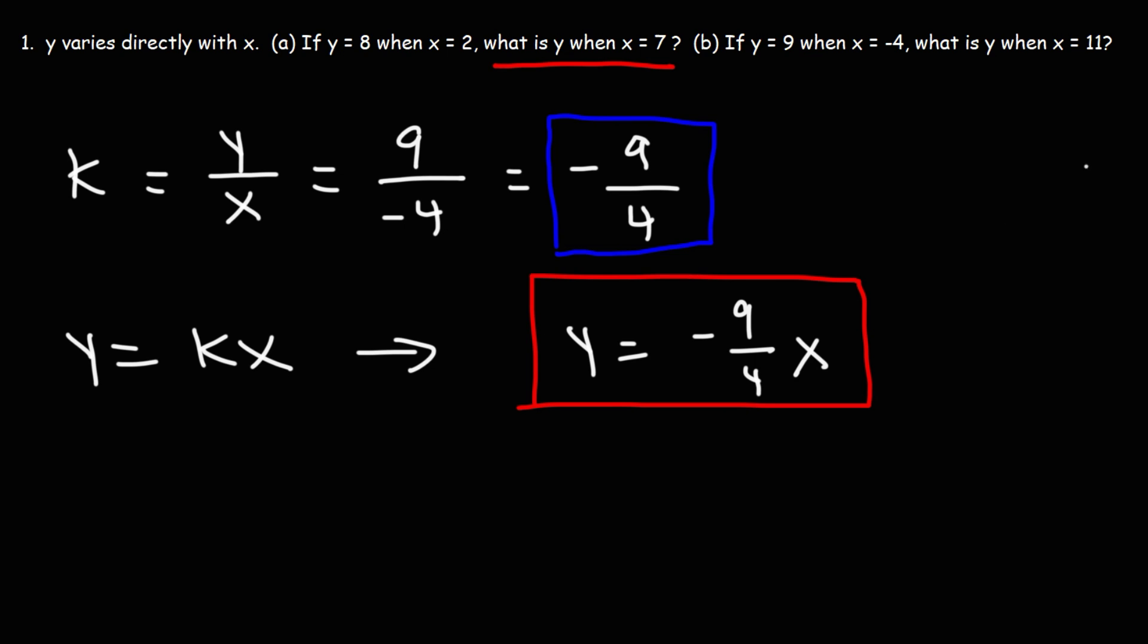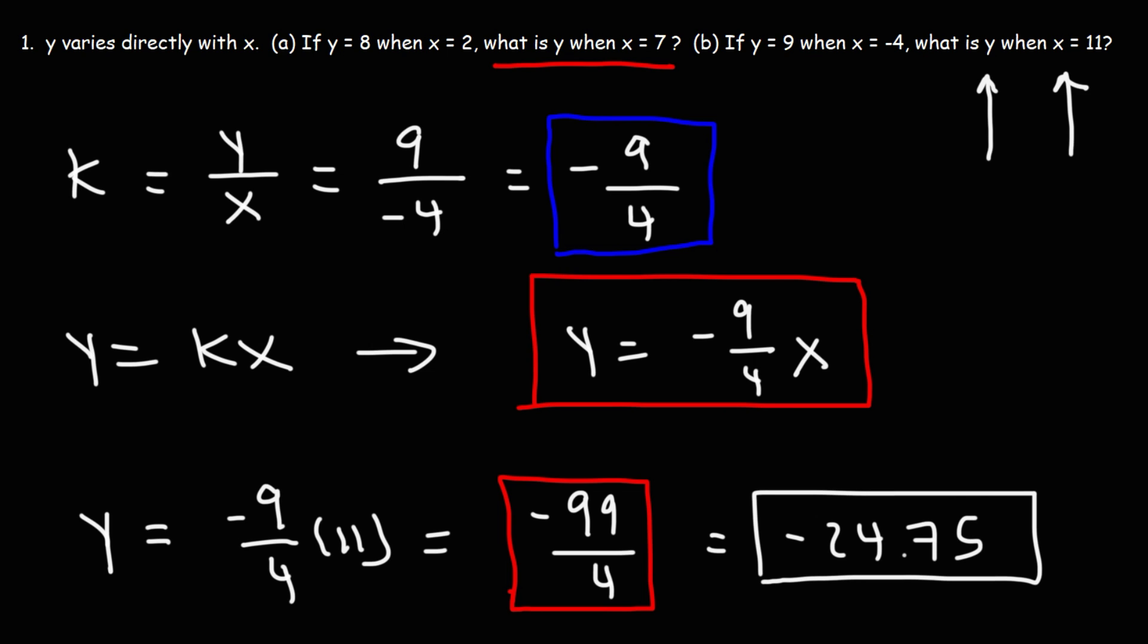Now the last step is to plug in the value of X to get Y. So we want to calculate the value of Y when X is 11. Negative 9 times 11 is negative 99. Now we can't really reduce that fraction. So I'm going to leave the answer like this. Y is negative 99 over 4. So that's how you can solve direct variation problems.